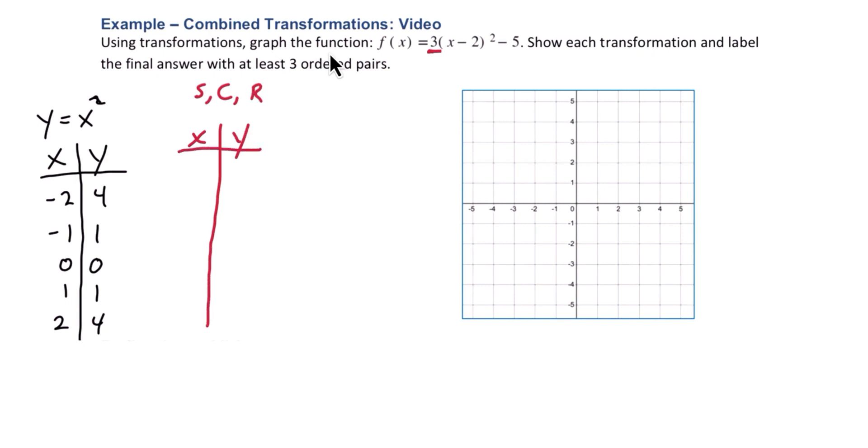Notice that 3 is on the outside of the function. That means it's affecting the y values in a logical way. So we're going to multiply each of these y values by 3. The x values stay the same. Multiply the y values by 3.